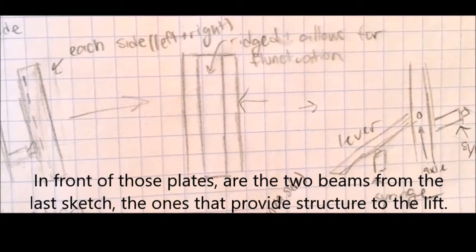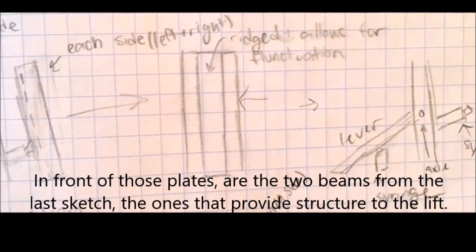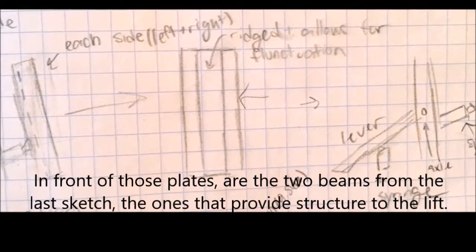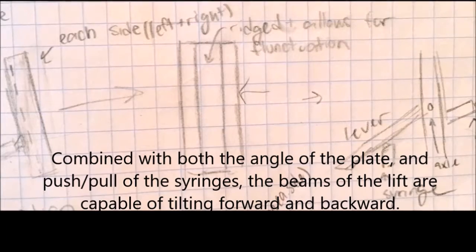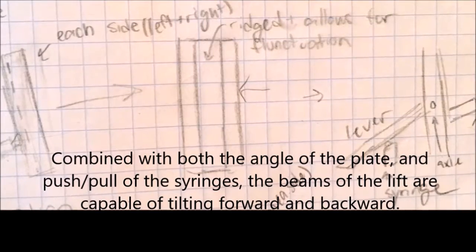In front of those plates are the two beams from the last sketch, the ones that provide structure to the lift. Combined with both the angle of the plate and push and pull of the syringes, the beams of the lift are capable of tilting forward and backward.